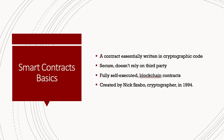That is why businesses, governments, and institutions are starting to lean more towards smart contracts and blockchain. Smart contracts were developed in 1994 by a cryptographer and legal scholar named Nick Szabo. He realized that the decentralized ledger could be used for self-executing contracts — basically, contracts could be converted to computer code, stored and replicated on a system of computers supervised by a network running on the blockchain.